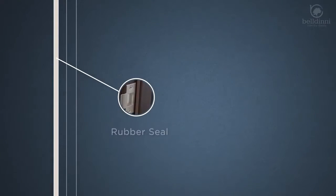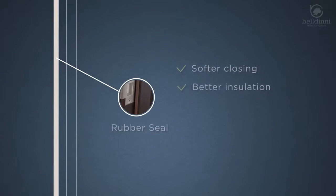Stops. In Beldini doorframes, they are trimmed with a rubber seal for softer closing and better insulation.